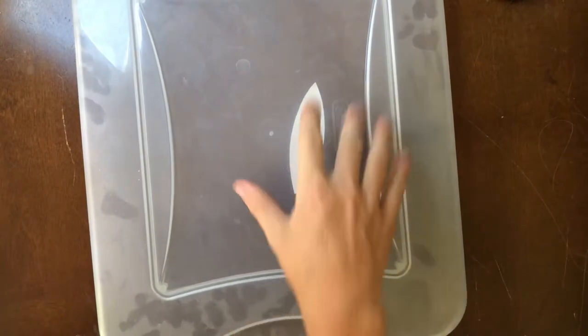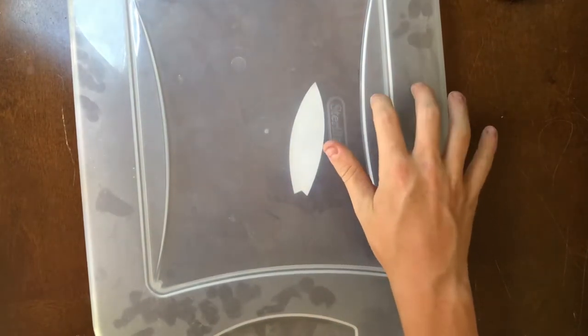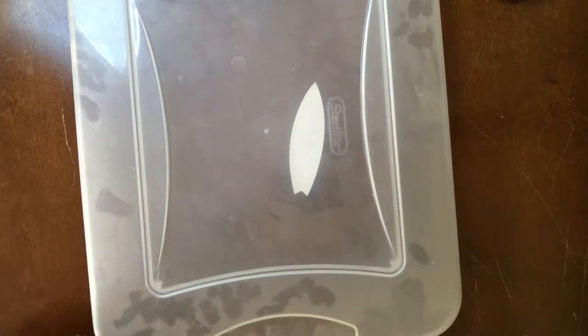Now that we have this cut out, we're going to take a container lid and cut out all the pieces that don't have bumps on it.